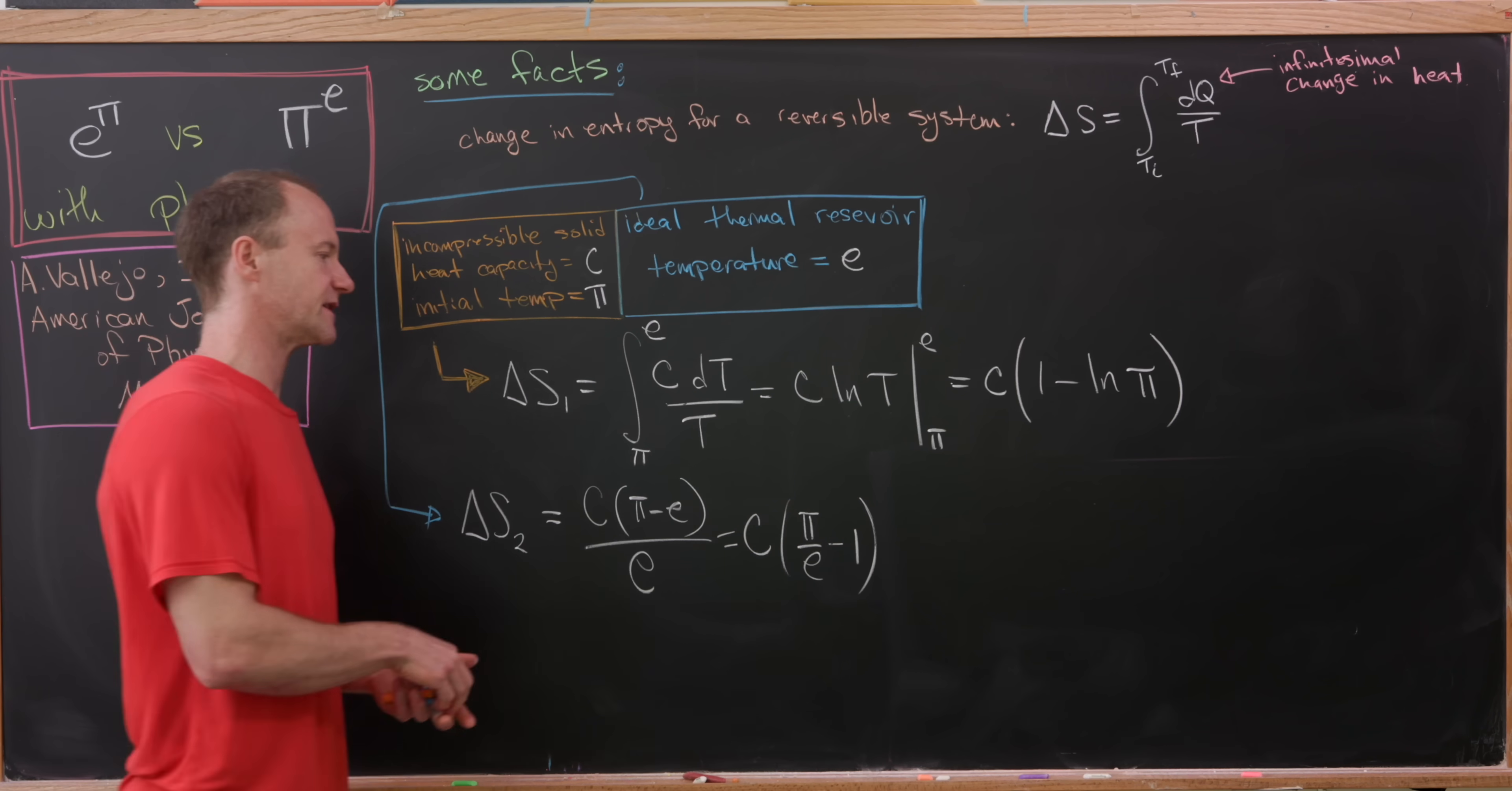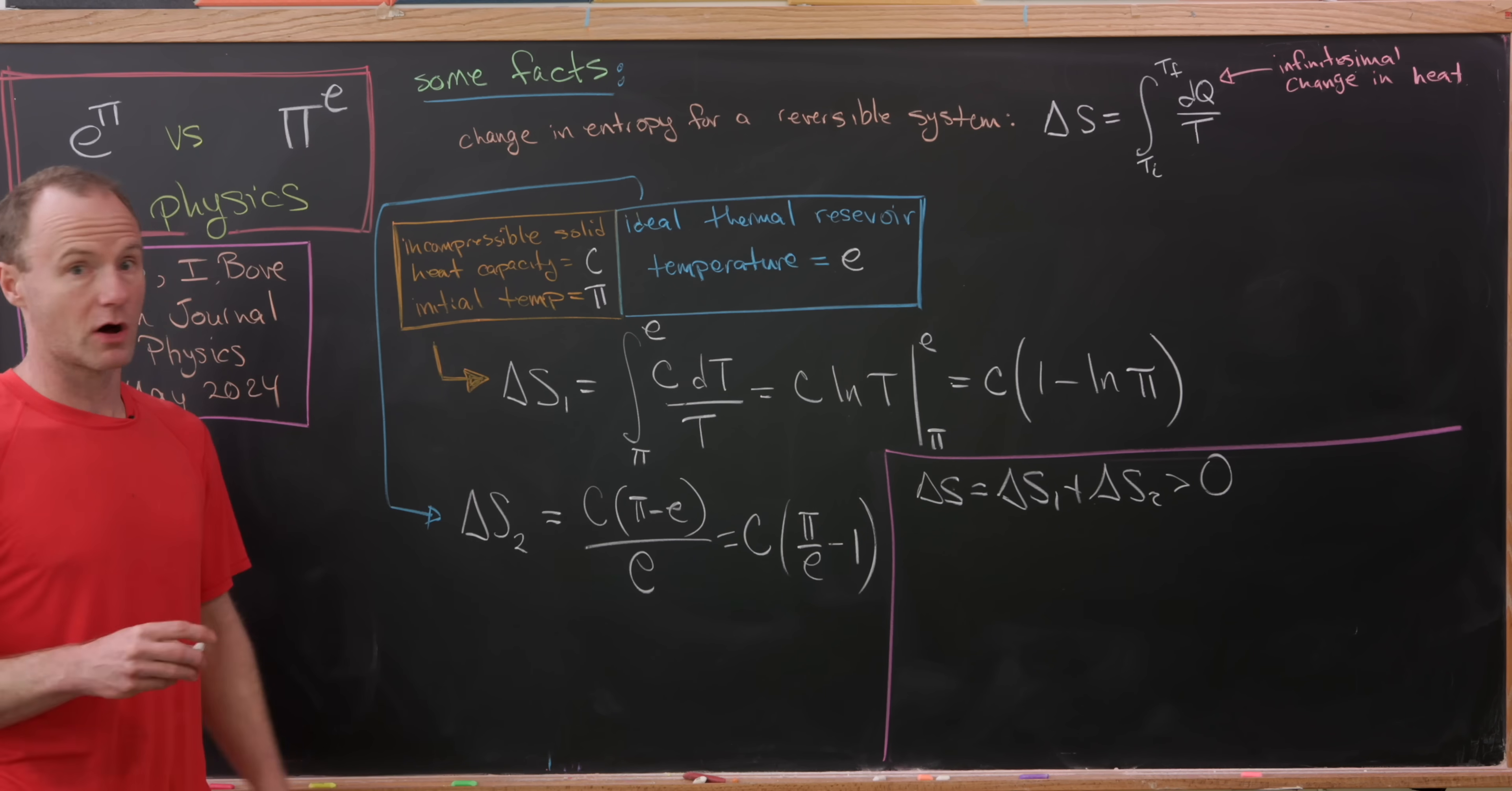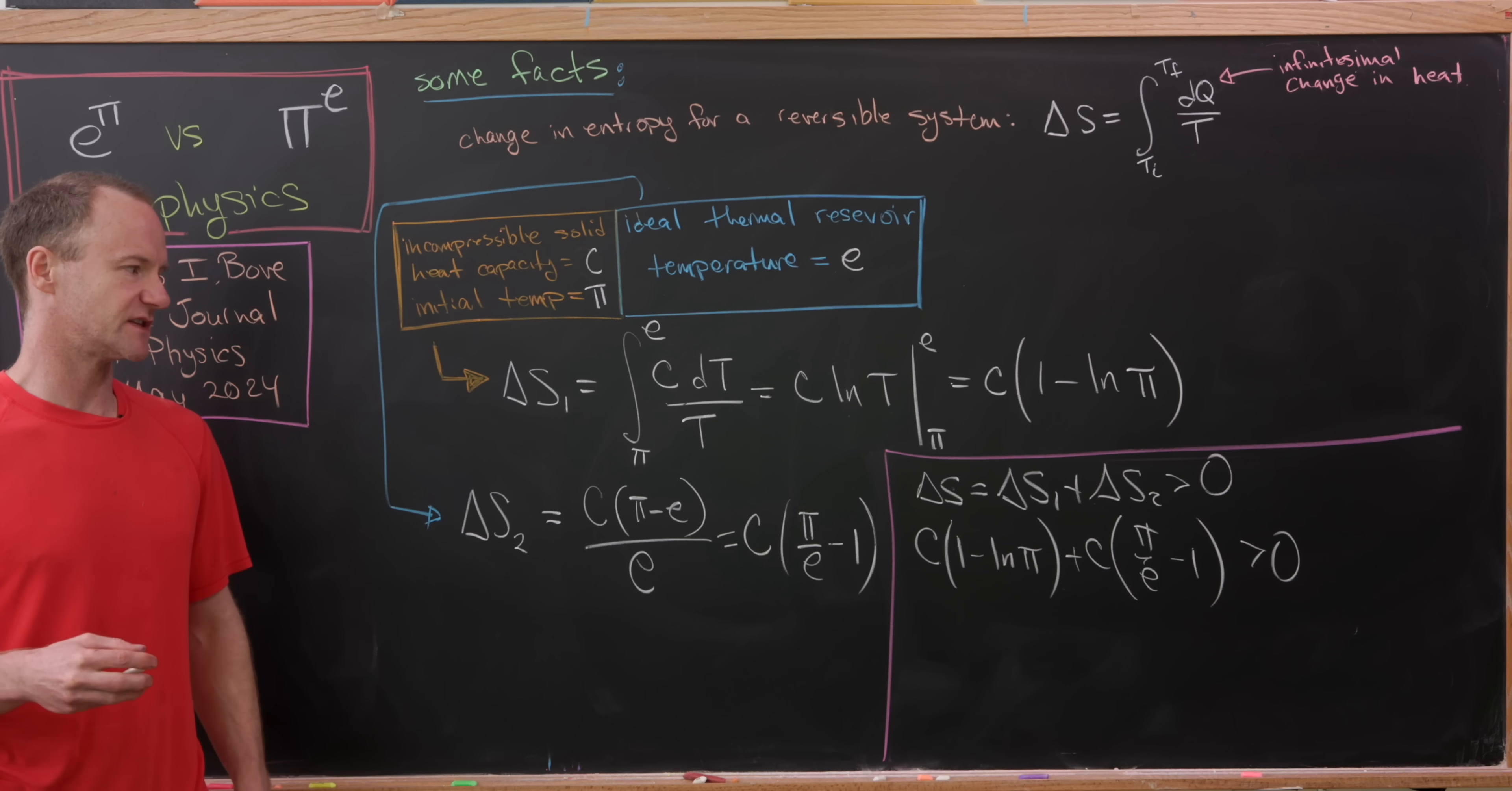But now we're very close to being done. Now we're going to look at the change of entropy in the entire system. So I'll write that as delta S. And that'll be equal to delta S sub 1 plus delta S sub 2. But by second law of thermodynamics, we know that entropy only increases. So we know that this has to be positive. But then, let's put in all of the parts that we have. So we've got delta S1. That's going to be C times 1 minus natural log of pi plus delta S2. That's going to be C times pi over E minus 1. And like I said, that needs to be bigger than 0.